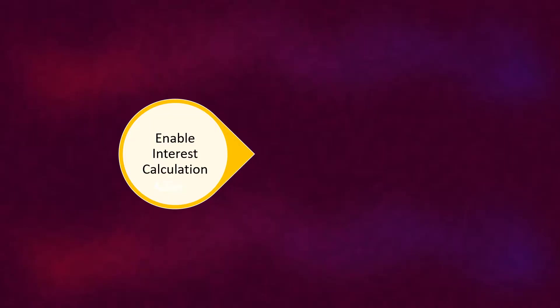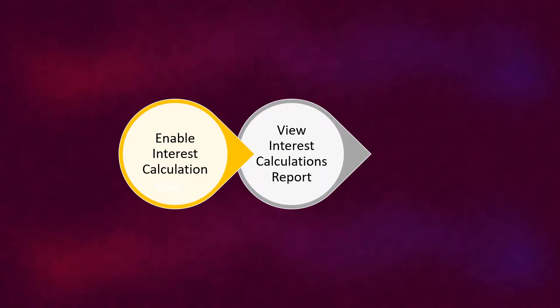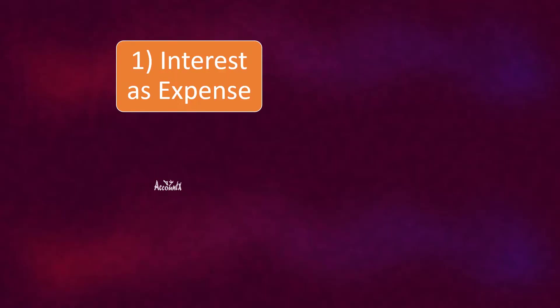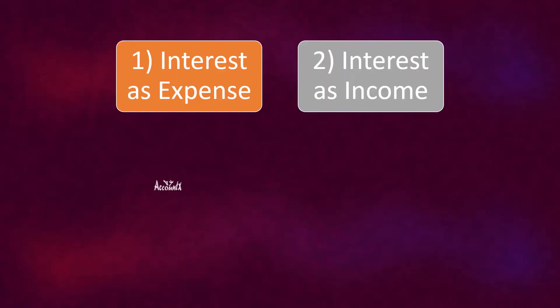I have split this into two parts. In the first part we will understand how to create a voucher when interest is an expense. In the second part let's create a voucher when interest is an income. But before that let's quickly understand the steps involved: first step is to enable interest calculation, then view the interest calculations report, and finally creation of vouchers. Today we'll cover interest as expense and interest as income.